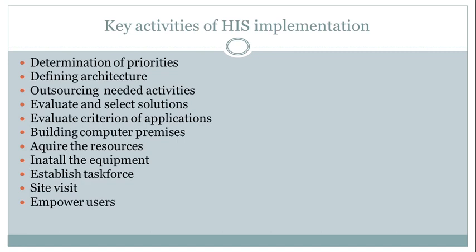Key activities of HIS implementation include determination of priorities, defining architecture, outsourcing needed activities, evaluating and selecting solutions, evaluating criterion of applications, building computer premises, acquiring resources, installing equipment, establishing a task force, conducting site visits, and finally, empowering users.